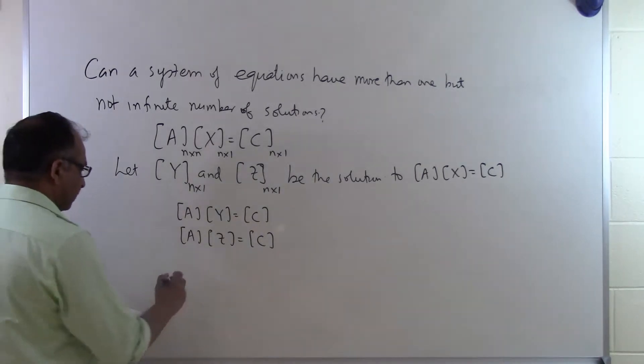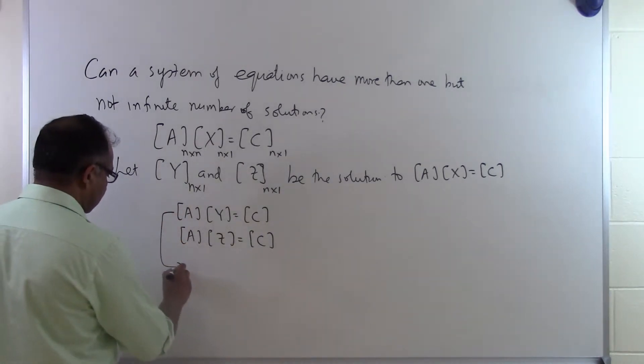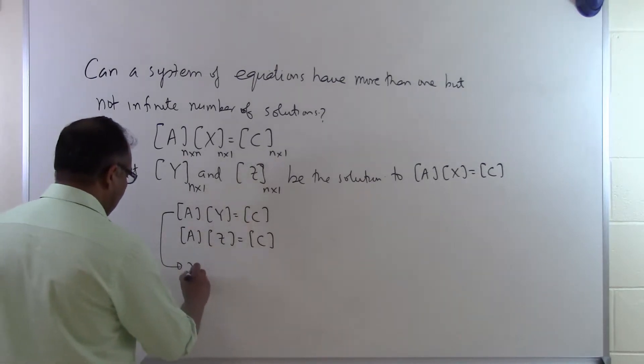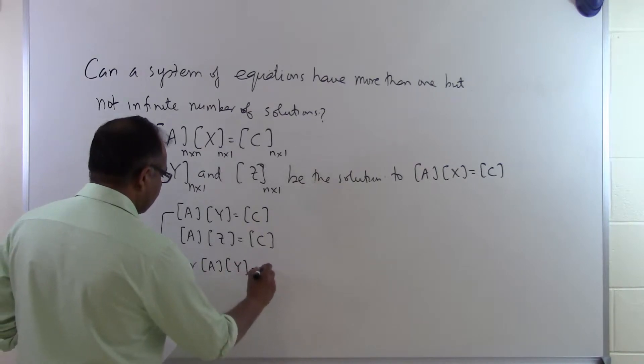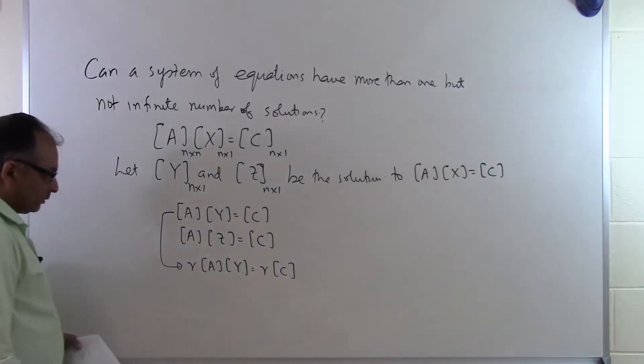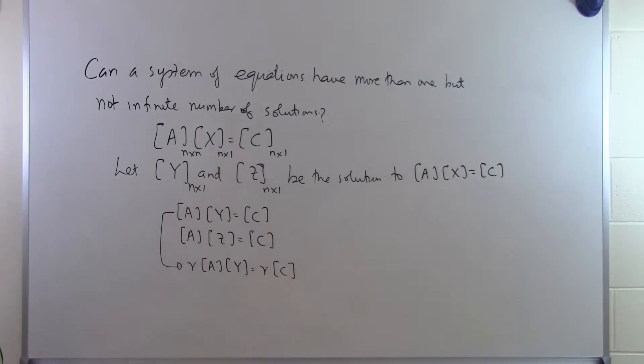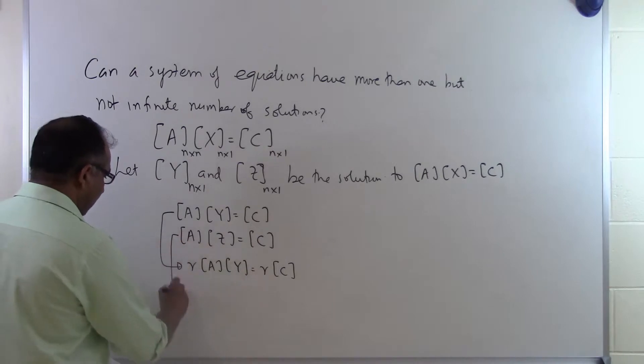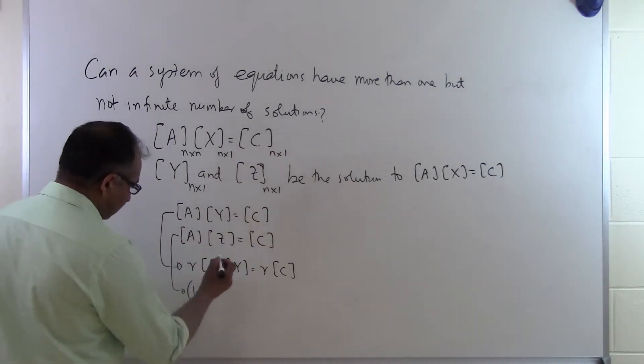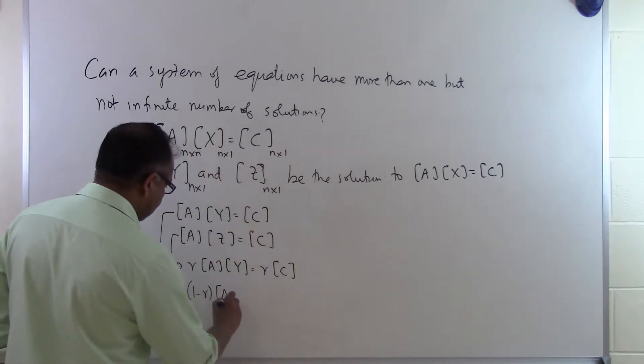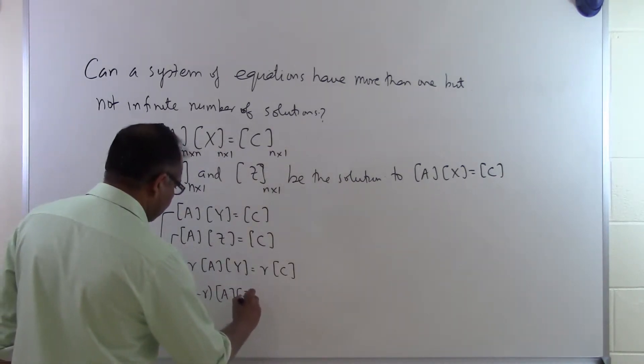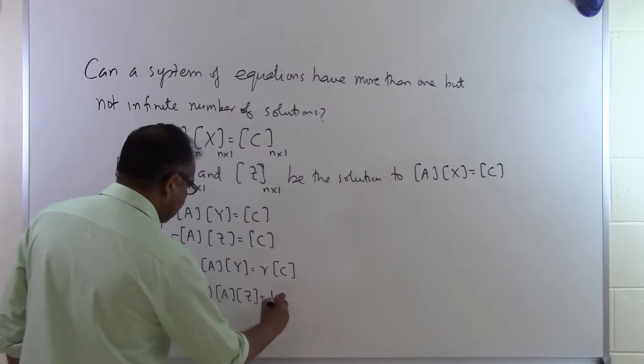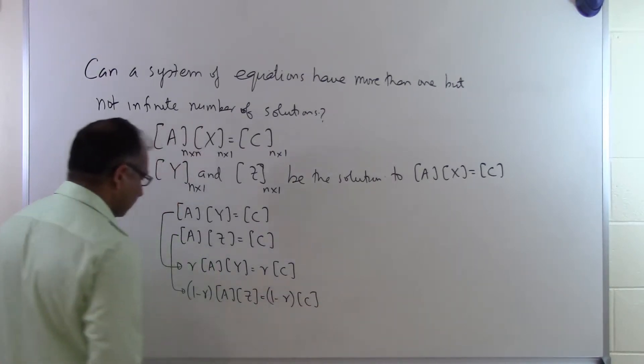Now what that means is that if I look at this particular set of equations, I will have R times A times Y will be equal to R times C. So if R is a scalar, I can multiply both sides by R. And what I do is I multiply this one by 1 minus R because R is a scalar, 1 minus R is also a scalar. So I say A times Z is equal to 1 minus R times C like this.